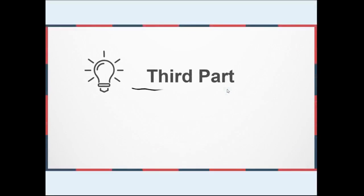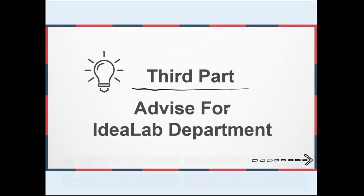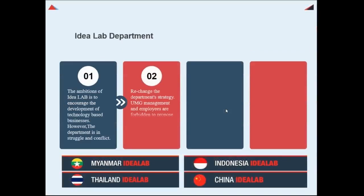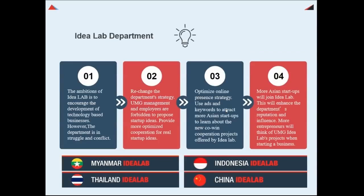For the third part, we are going to talk about the advice for the Idealab department. The ambition of Idealab is to encourage the development of technology-based businesses and entrepreneurship within Asia. The purpose of the department is to exchange promotion and support for an entrepreneurship team's up to 20% share. My suggestion is that Idealab should re-examine its department strategy — we could make rules that UMG management and employees are forbidden to propose startup ideas, and we will provide more optimized cooperation for true startup ideas, and also optimize the online pricing strategy.